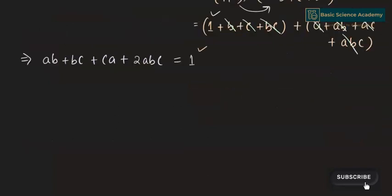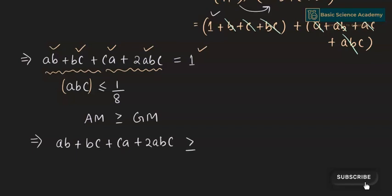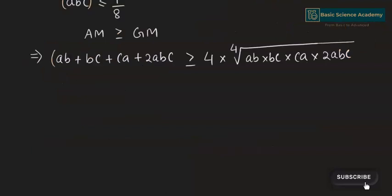Now we need to prove abc ≤ 1/8. To isolate abc, we apply the AM-GM inequality to the terms ab, bc, ca, and 2abc. The arithmetic mean is (ab + bc + ca + 2abc)/4, which is greater than or equal to the geometric mean: the fourth root of ab · bc · ca · 2abc. We have the left side equal to 1/4.